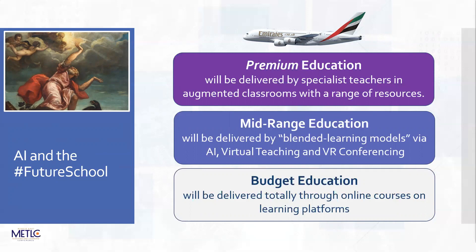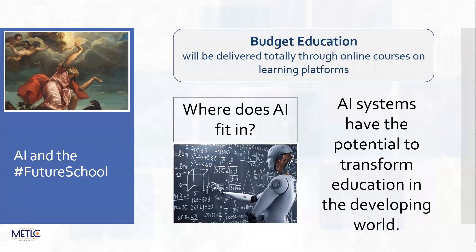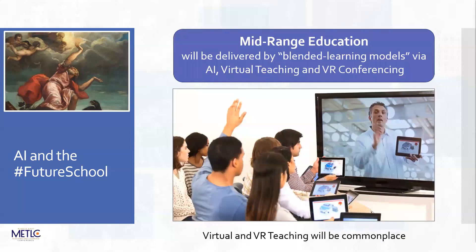In terms of budget education, given that there are 263 million children in the world who aren't in education, some education is better than no education. The Sugata Mitra 'Hole in the Wall' project is perhaps an icon for that. In that context, AI has the potential to totally transform education in the developing world - the scalability of online platforms makes it really easy - and that's a really important way in which AI could absolutely change the world.